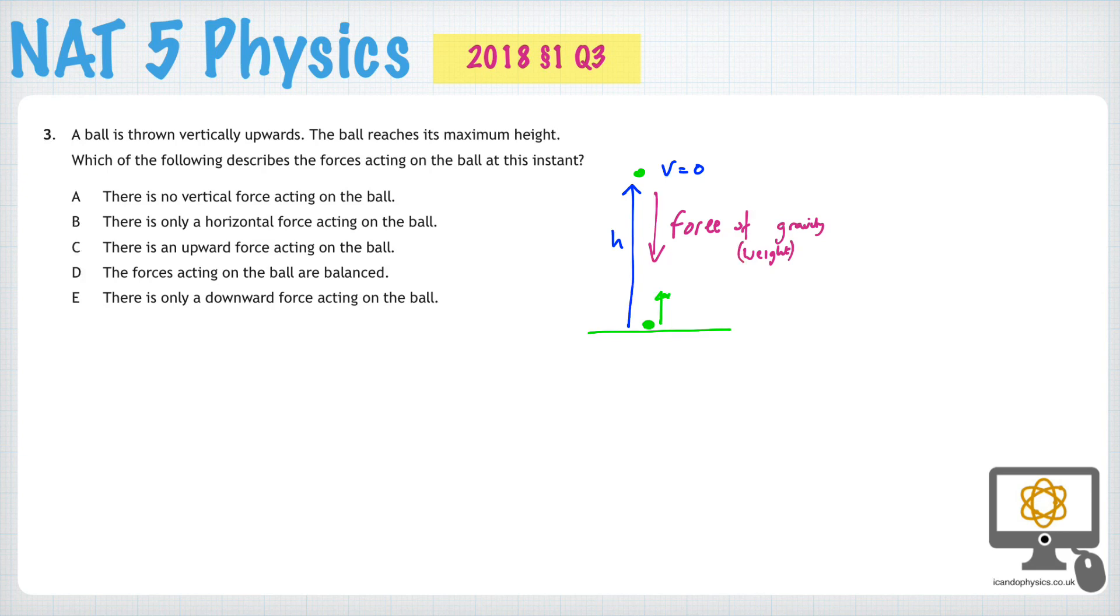Let's go through the options and see which is correct. There's no vertical force on the ball, option A. Well that's clearly incorrect. There's only horizontal forces on the ball. Well it's not moving horizontally left or right. It was never moving that way, so that's also incorrect. There is an upward force acting on the ball. Well if there was, it would maybe accelerate upwards, so that cannot be correct either.